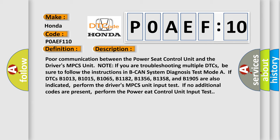Note if you are troubleshooting multiple DTCs, be sure to follow the instructions in B-CAN system diagnosis test mode A. If DTCs B1013, B1015, B1065, B1182, B1356, B1358, and B1905 are also indicated, perform the driver's MPCS unit input test. If no additional codes are present, perform the power seat control unit input test.